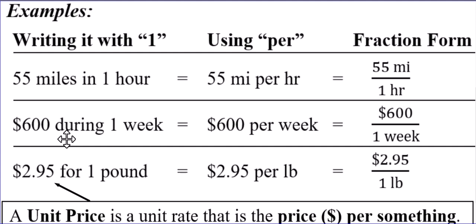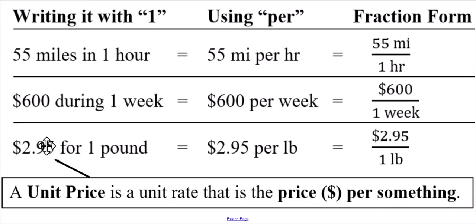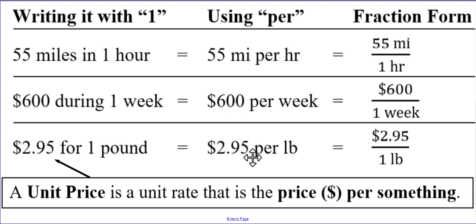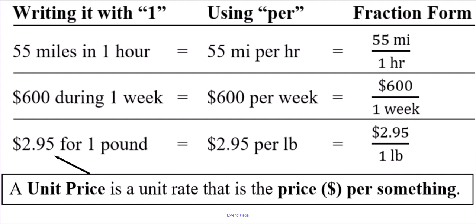Here are some more examples: $600 during one week — that would be $600 per week; in fraction form, $600 over one week. Then 295 for one pound. All of these are unit rates because it's the idea of being for one of something. This one's a unit price because it's the price per something. I could also say 295 per pound, or 295 over one pound.